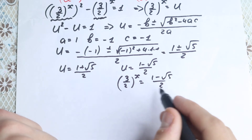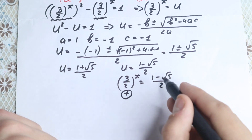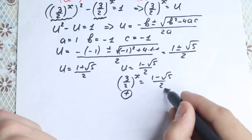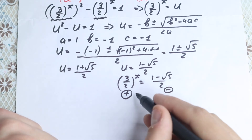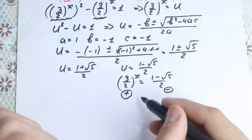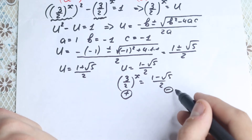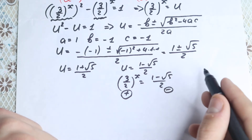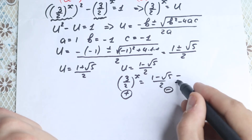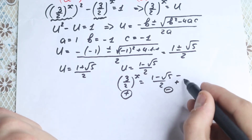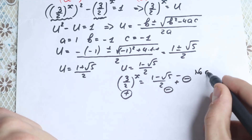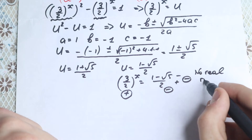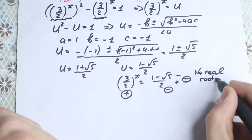But if you look closely, 1 minus square root of 5 is negative, and this is an exponential expression, which is always positive. So negative over positive is negative — no real roots here. Maybe a complex solution, but we are looking for real roots, so no real solution for this case.